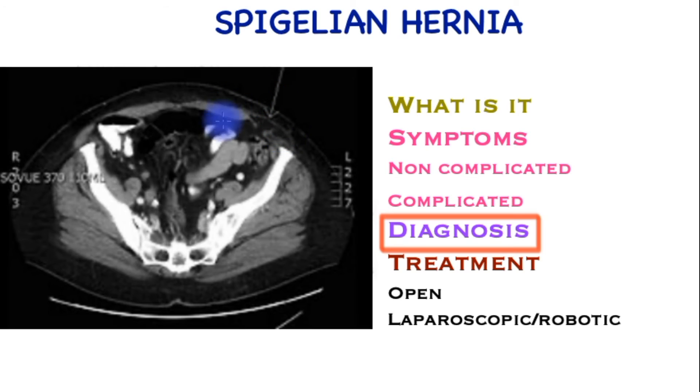In this instance, we can see a hernia on the left side where a defect can be seen on a CT scan, which would not have been apparent otherwise.